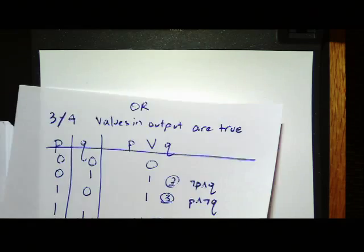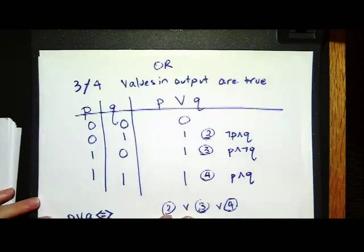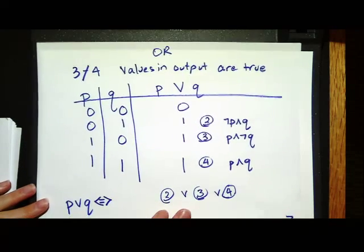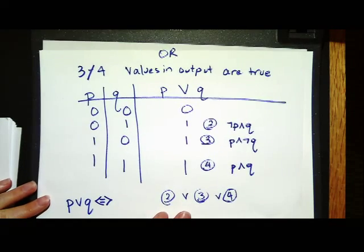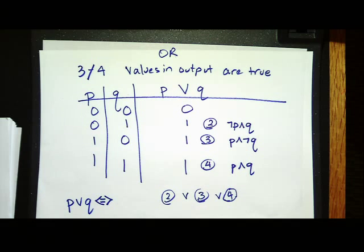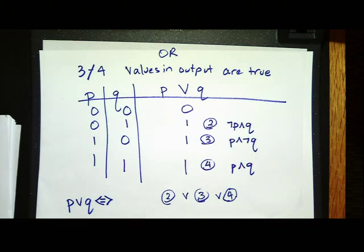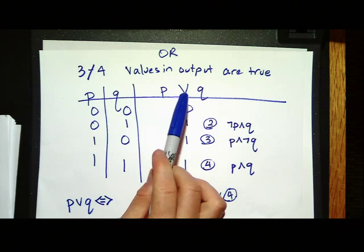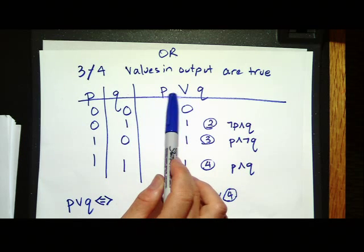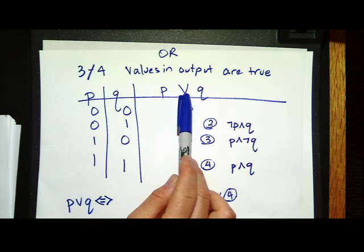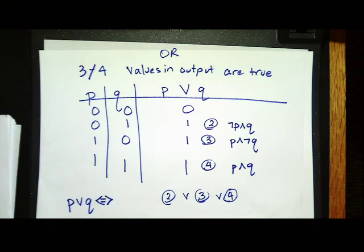OR was one of the logical operators we looked at. Three out of four values in the output are true. We denote it with something that looks like a V, and it's true when P is true, or when Q is true, or both.